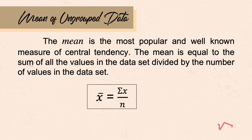We begin with the mean of ungrouped data. The mean is the most popular and well-known measure of central tendency. It can be used with both discrete and continuous data, although its use is most often with continuous data. The mean is equal to the sum of all the values in the data set divided by the number of values. This is the closest to the definition of average. The mean is identified by the formula: sigma X over N, where sigma X is the sum of all the given data, and N is the sample size.